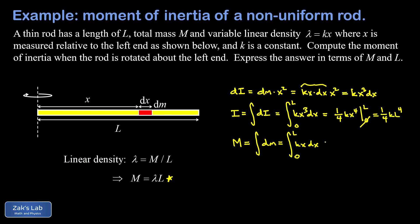And the whole point of this is that we're going to end up with an expression that relates k to M and L. And again, this is just a quick power rule kind of integral. So I end up with a one half kx squared evaluated from zero to L. Again, the lower limit vanishes, and I end up with just one half kL squared.